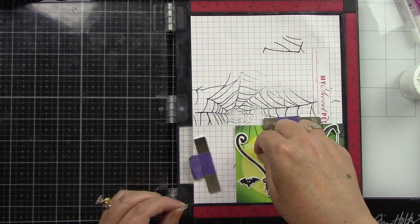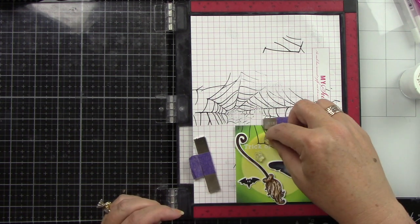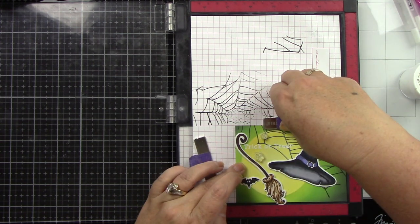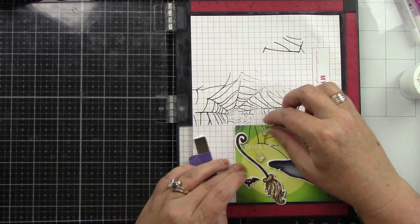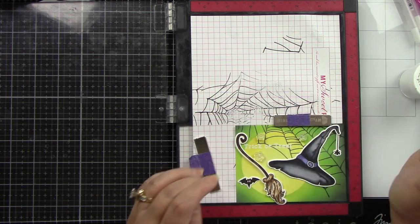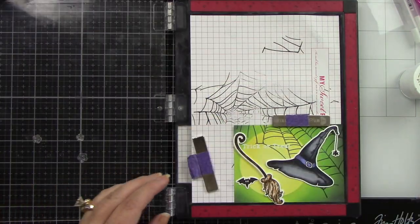I stamped—forgot to record it, sorry—the sentiment "Trick or Treat" from the Happy Halloween set and did some white heat embossing. Now I'm placing the stars from the If the Broom Fits stamp set—three stars in different sizes.